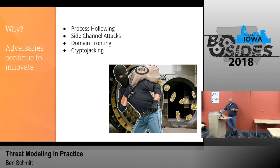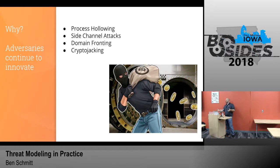Why does threat modeling matter? Our adversaries continue to innovate — they're constantly changing their game. Process hollowing is a good example: you take suspended code, replace what's behind it, and then you have a process running that's no longer trusted. Side channel attacks like Spectre and Meltdown, domain fronting to obfuscate where you're coming from, and crypto jacking — where someone gets your browser to run a miner for Monero or Bitcoin — are examples. Our adversaries are always doing new stuff.